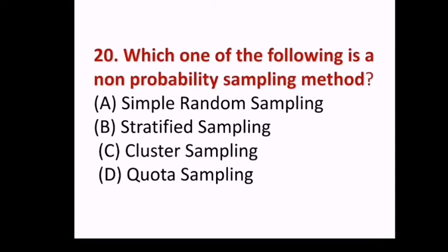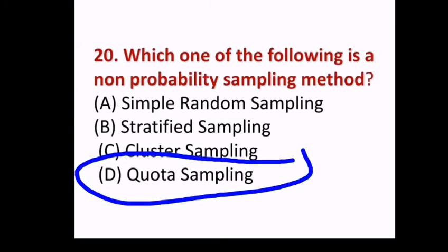Next question: Which one of the following is a non-probability sampling method? (A) Simple random sampling, (B) stratified sampling, (C) cluster sampling, (D) quota sampling. Answer D, quota sampling.